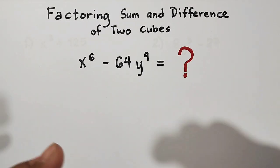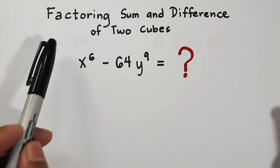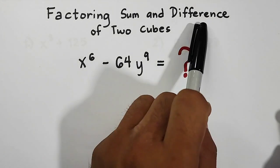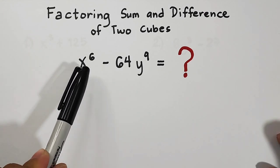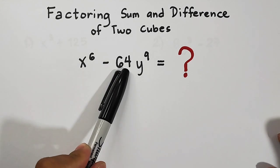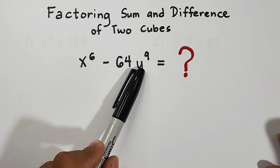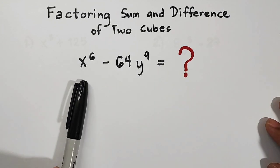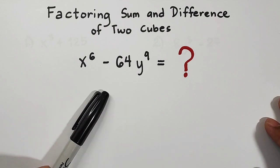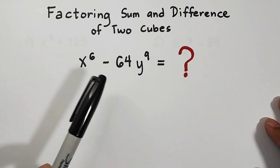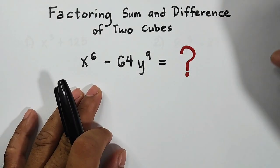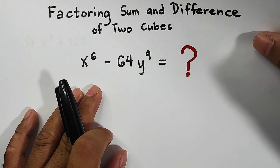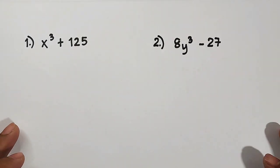Hi guys, it's me Teacher. In today's video we will talk about factoring sum and difference of two cubes. As you can see we have here x raised to 6 minus 64y raised to 9. The question is: what are the factors, or how are we going to factor this kind of expression? So without further ado, let's do this topic.